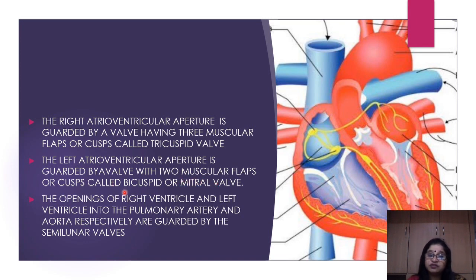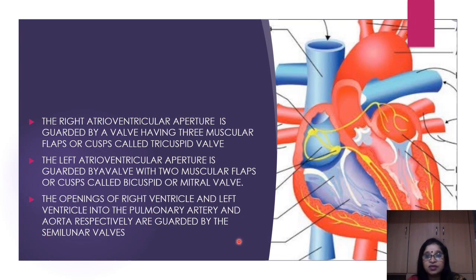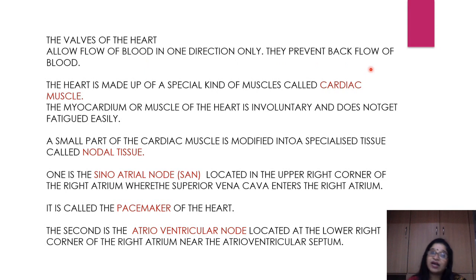The openings of both ventricles also have valves. From the right ventricle, the pulmonary artery exits towards the lungs; from the left ventricle, the aorta carries blood to the systemic circulation. Both the pulmonary artery and the aorta have half-moon shaped valves — called semilunar valves — to regulate flow and prevent backflow of blood. The function of all heart valves is to allow blood flow in one direction only.